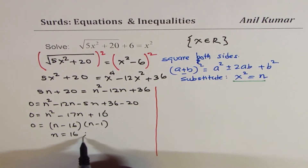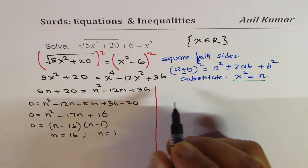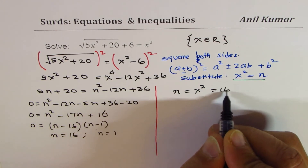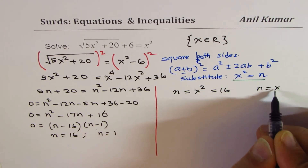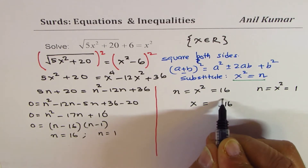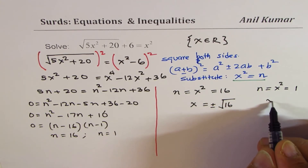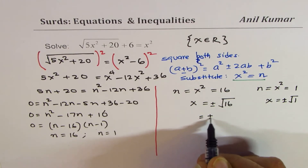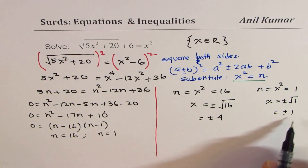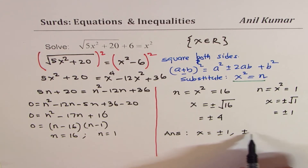Substituting back, since n = x², we have x² = 16 or x² = 1. Taking square roots — don't forget to write plus and minus or you may lose half marks — gives x = ±4 and x = ±1. So we are getting four possible values as our solution.